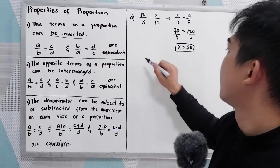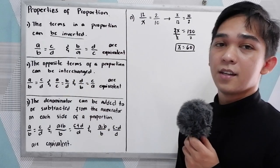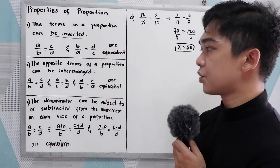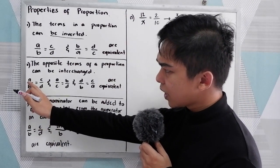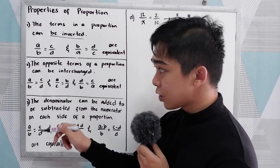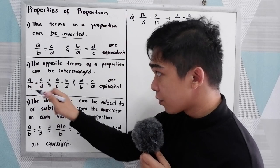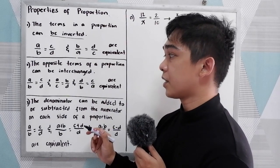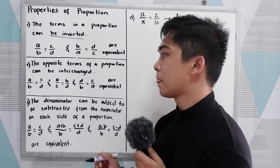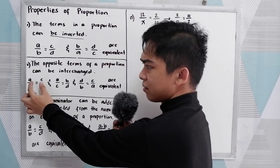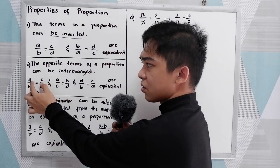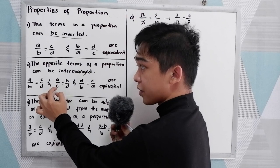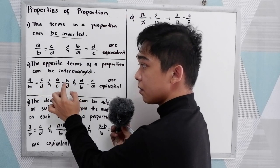Property number two: the opposite terms of a proportion can be interchanged. If A over B equals C over D, that is also equal to A over C equals B over D, and D over B equals C over A. In this case, our numerators A and C can be interchanged.